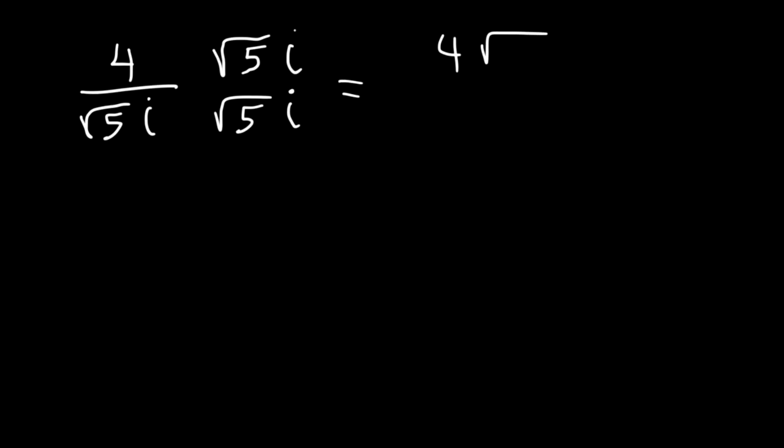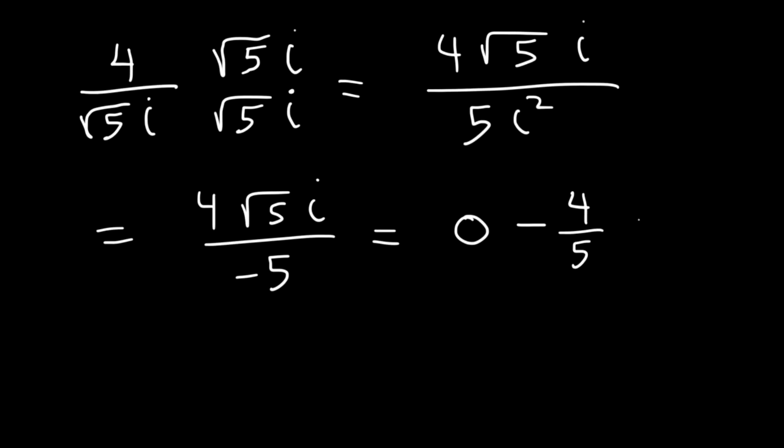So on top, it's going to be 4 root 5 times i. On the bottom, root 5 times root 5 is 5. i times i is i squared. So 5i squared is equal to negative 5. So in a plus bi format, it's 0 minus 4 over 5 root 5 times i.